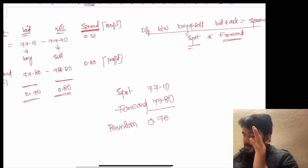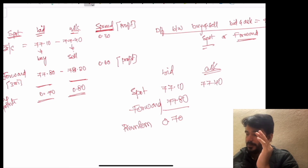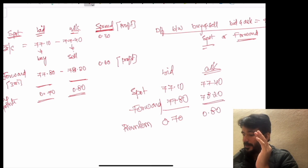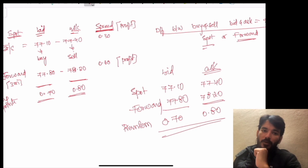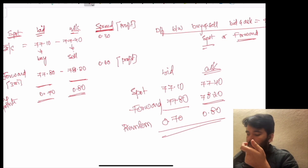Looking at the ask side: spot is 77.40 and forward is 78.20. The difference there is 80 points premium. So bid premium is 70 and ask premium is 80 — this is in the increasing trend.